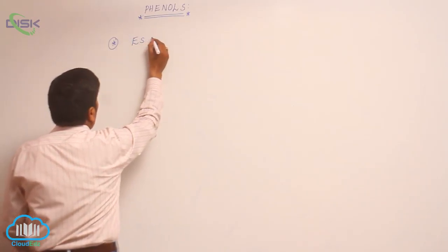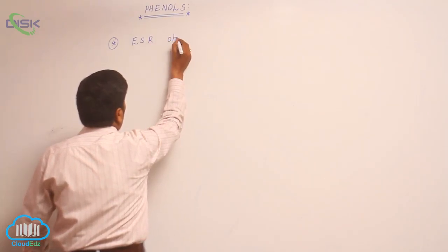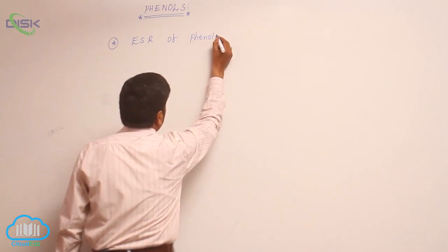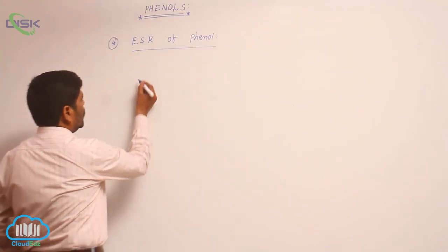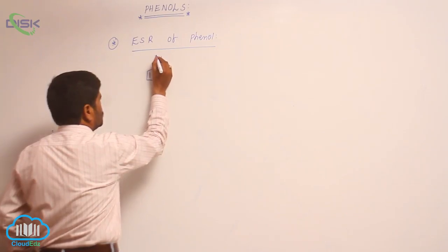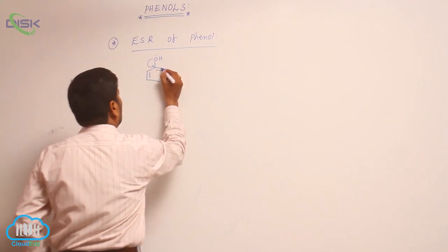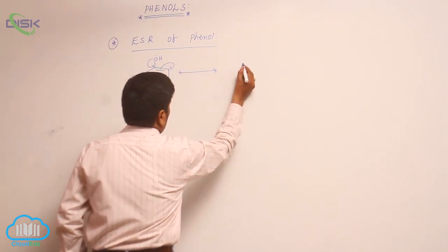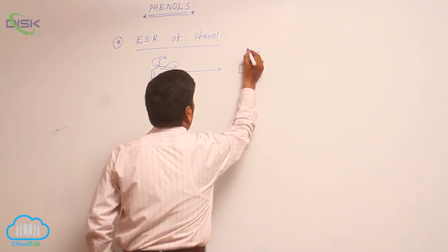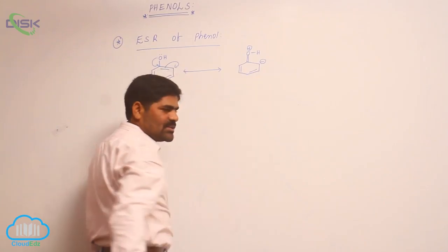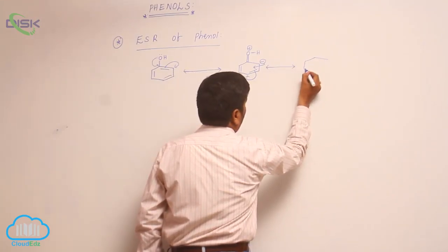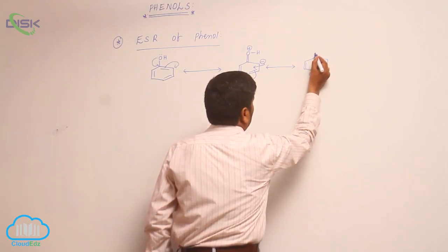Next: electrophilic substitution reactions of phenol (ESR). Phenol is an aromatic molecule, therefore it undergoes electrophilic substitution reactions. When we observe the resonance structures of phenol, electron density increases at ortho and para positions. That is the reason why phenol is an ortho-para directing group.